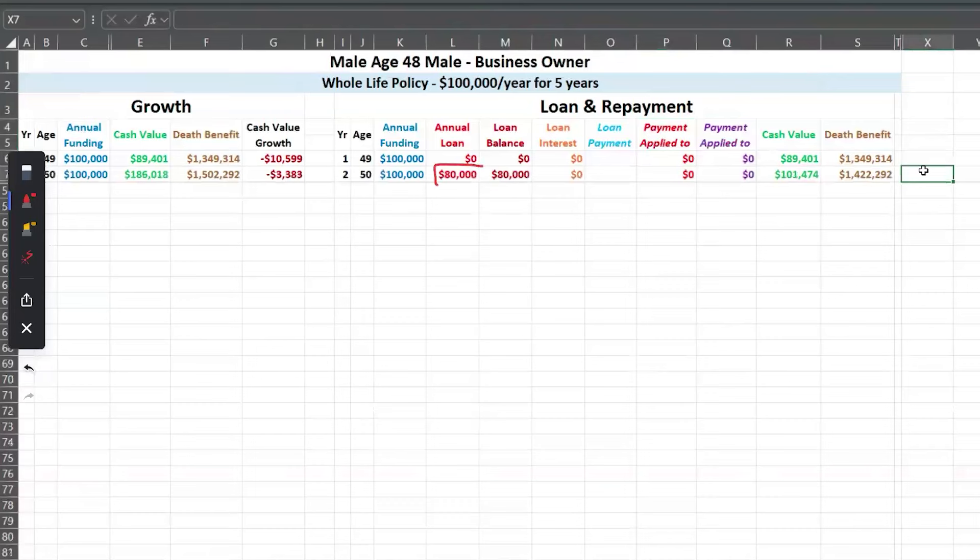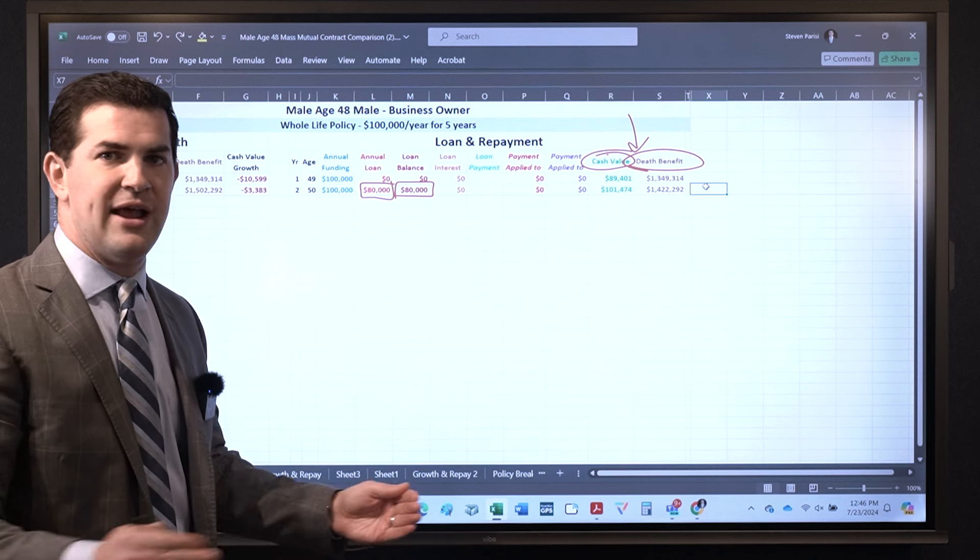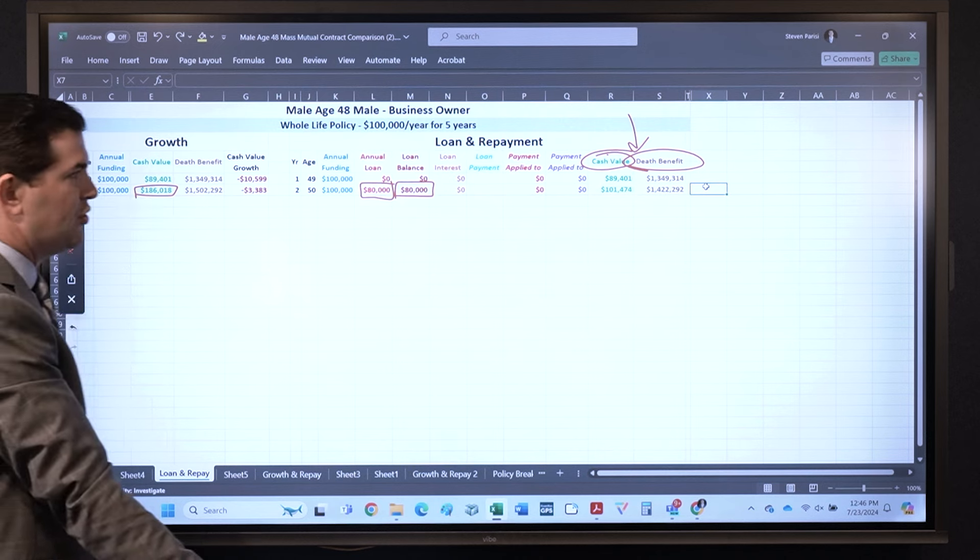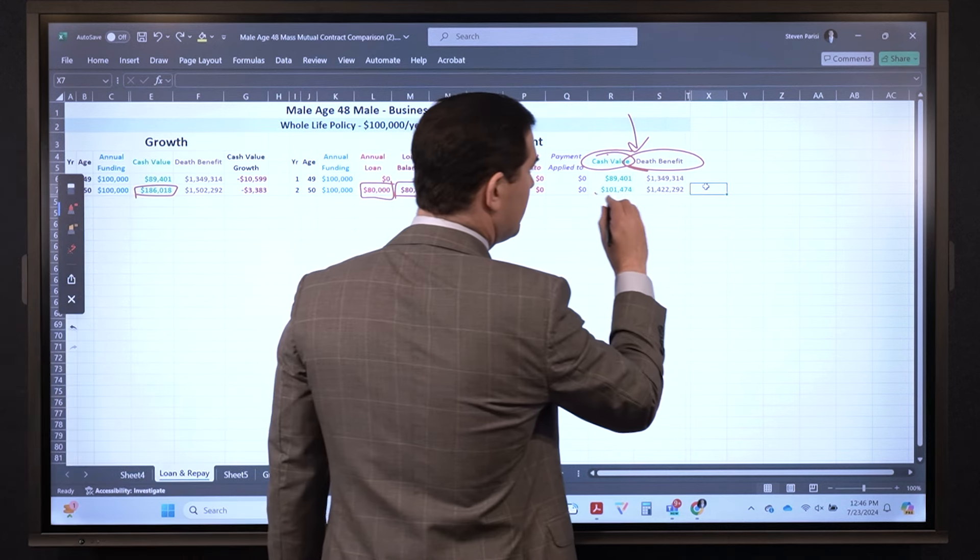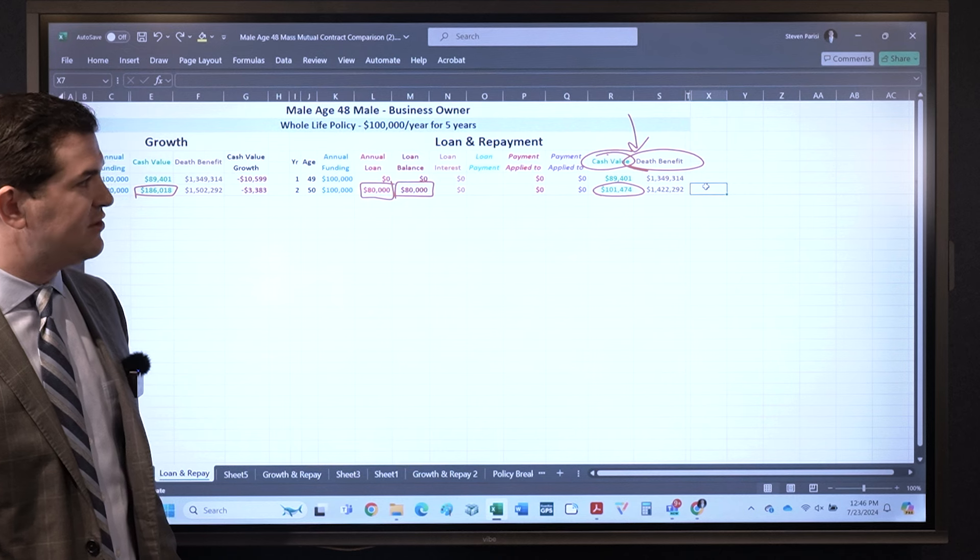So we take an $80,000 loan, our loan balance is now $80,000. What impact did it have on his policy? Your cash value is the gauge that determines how much you can borrow - think of it as your credit line. Pre-loan was $186,000, you borrowed $80,000, drops by about $80,000. In this example I can access another $101,000.